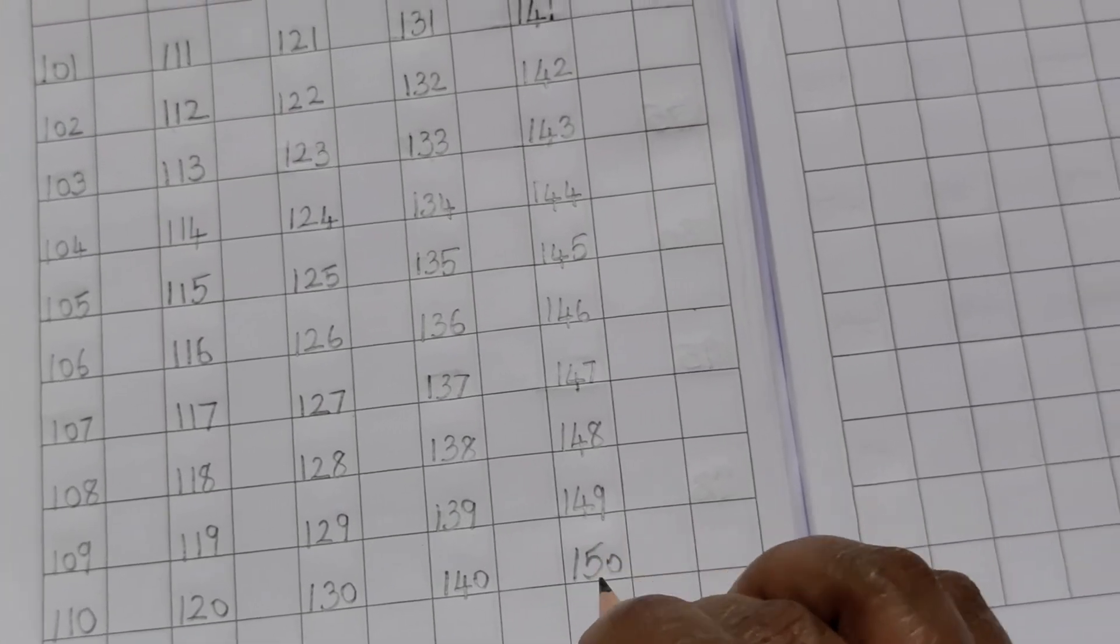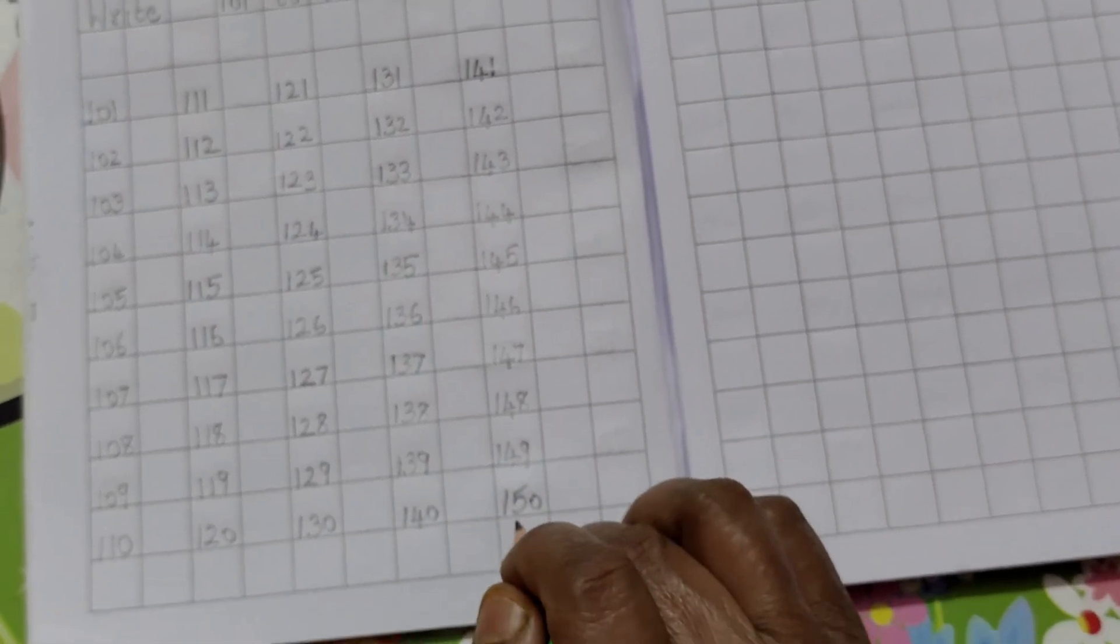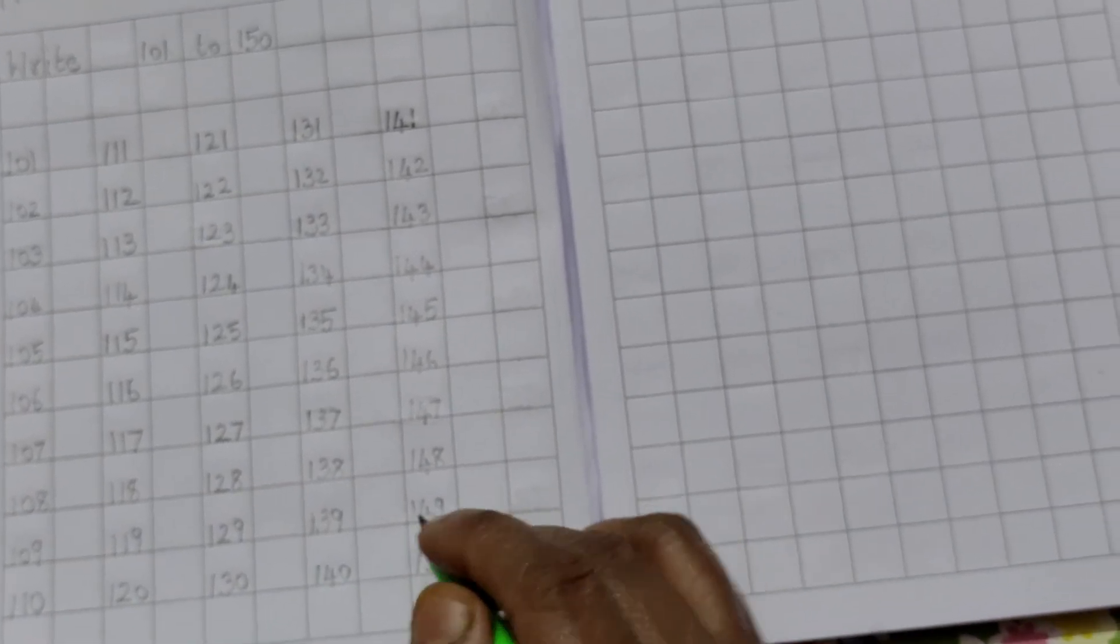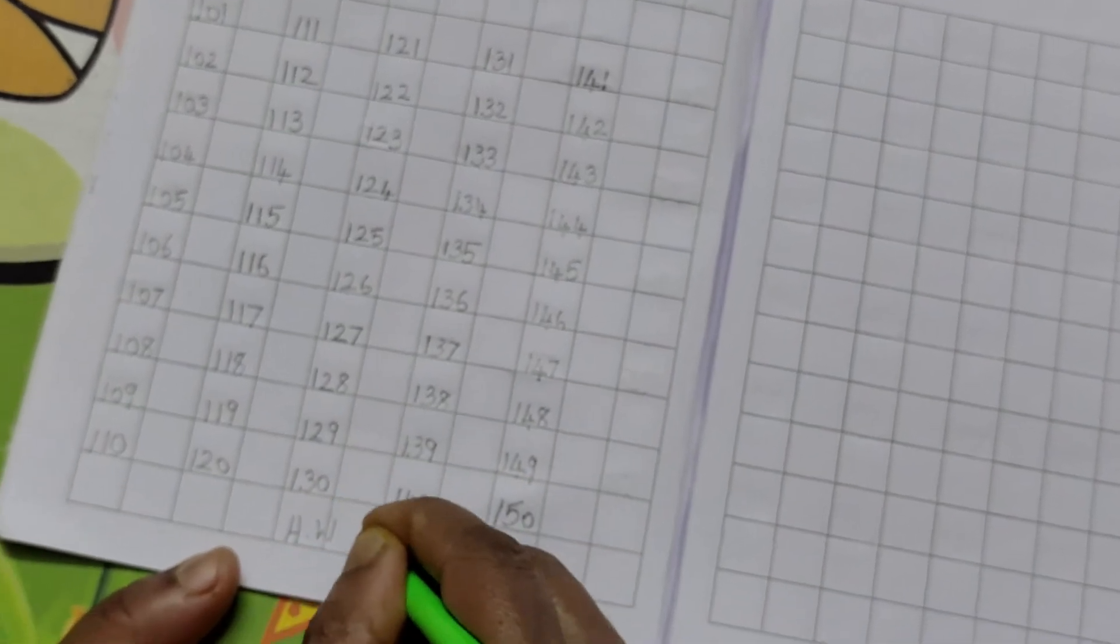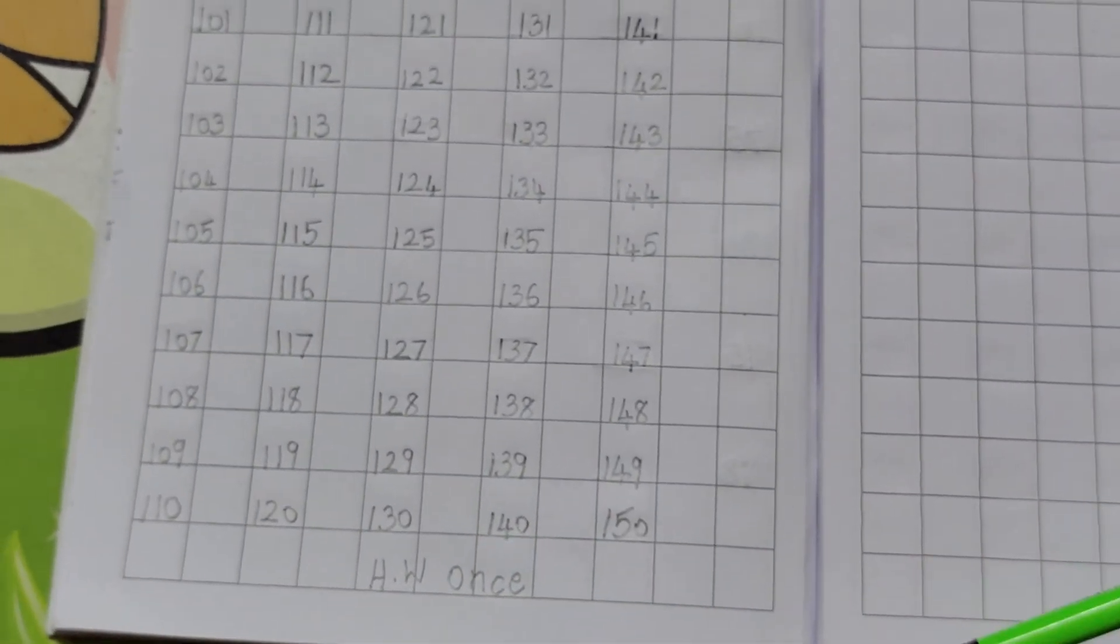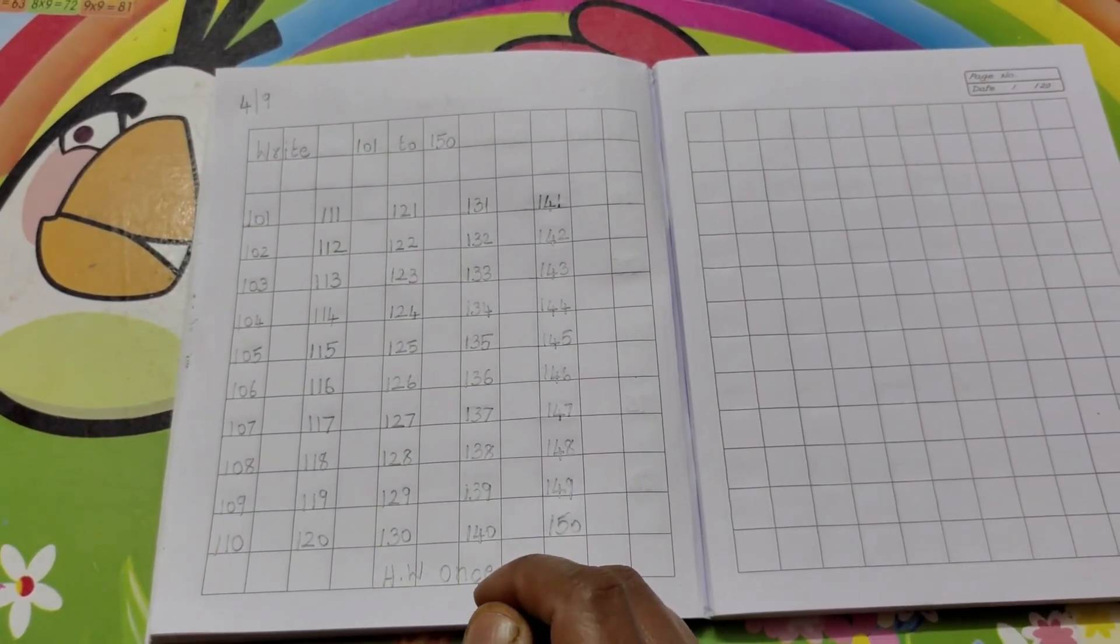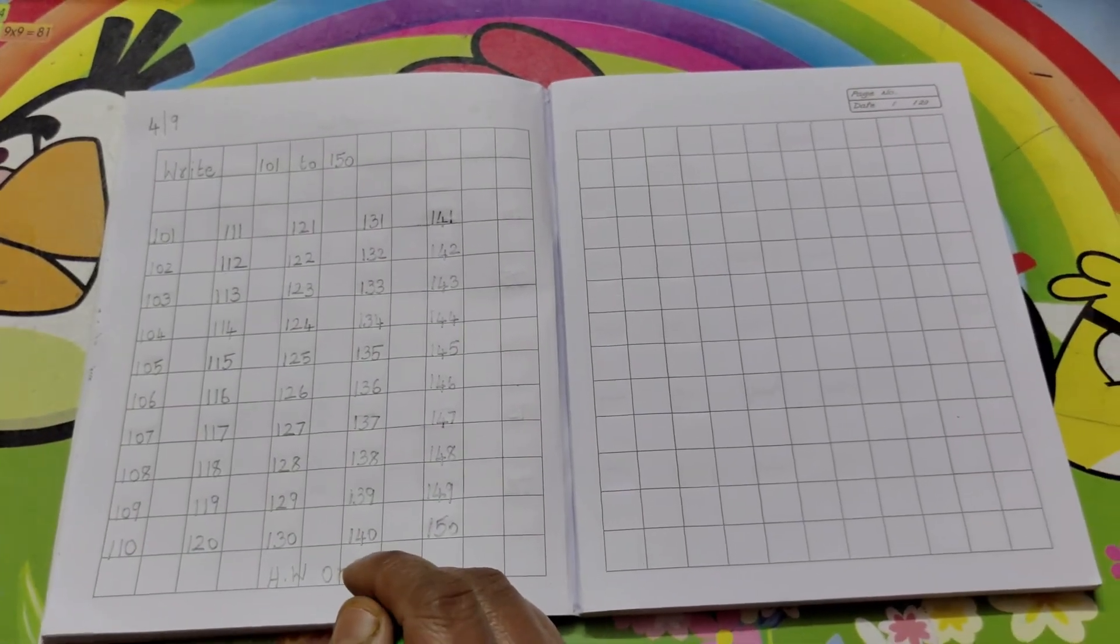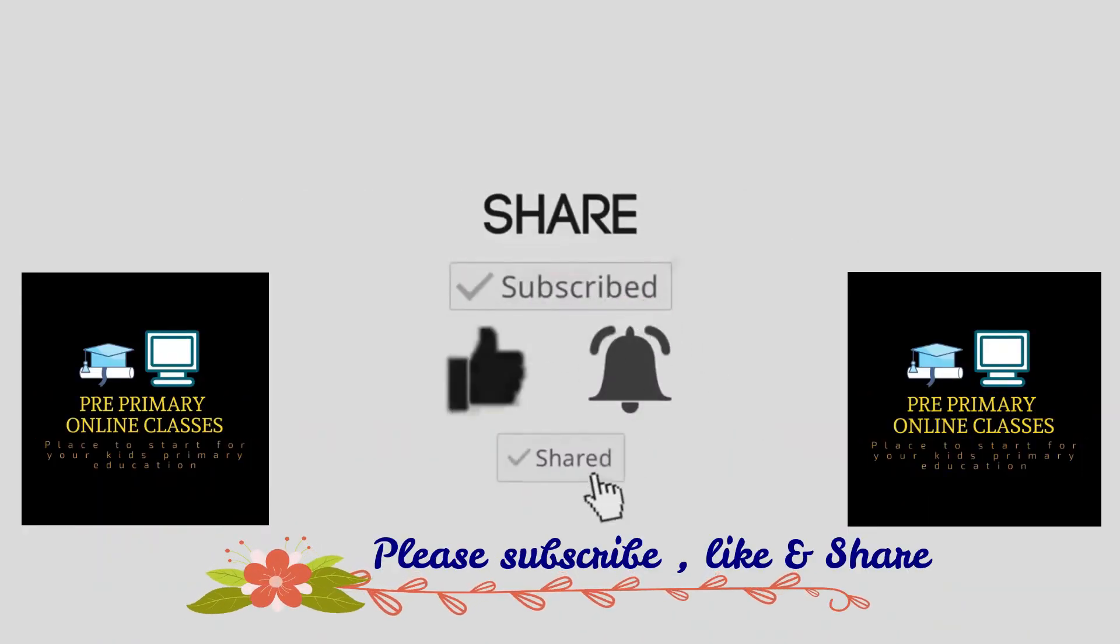Write slowly and neatly children. The number should be inside the box. The number shouldn't come outside the box. The number should be inside the box. Write homework once. Parents kindly help your children to write the homework. Thank you.